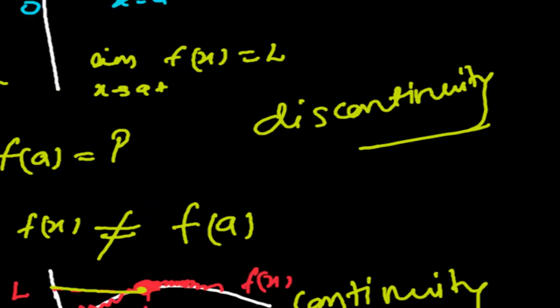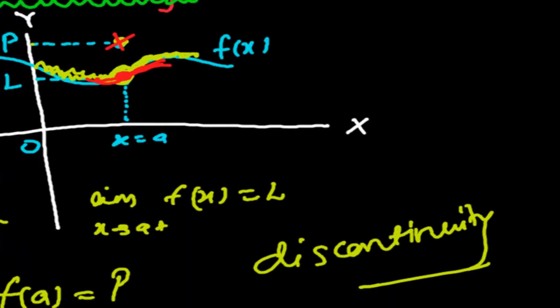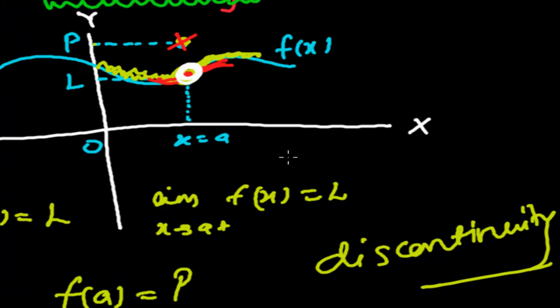Let's see some more discontinuous examples so you can easily distinguish when a function becomes continuous. The first condition was like this: at some point the function is hollow. If it is hollow, we can say this is discontinuous — this is the first case when the function becomes discontinuous, meaning the function value and the limit are not equal.